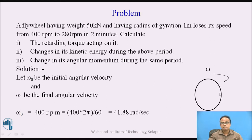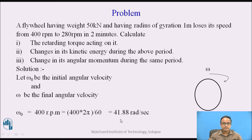Let us consider this flywheel rotating with angular velocity omega. Initial velocity is omega 0 and the final velocity is omega. Initial speed is given as 400 RPM and final speed is given as 280 RPM. Using omega equals 2 pi n, 400 RPM is converted to angular velocity as 400 into 2 pi divided by 60, which equals 41.88 radian per second. We divide by 60 to convert from per minute to per second.